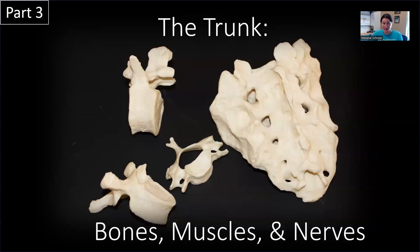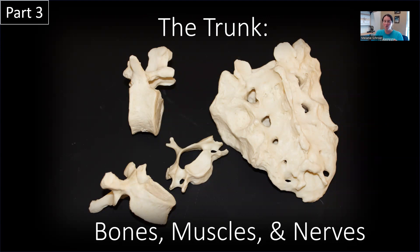Hi there, welcome to part three. In this video we are going to apply some of those important muscle physiology concepts to some specific muscles of the trunk. Specifically, we need to know that the origin is the fixed point, the less movable attachment site, the insertion is the more movable attachment site, and so when the sarcomere shortens, the insertion moves toward the origin.